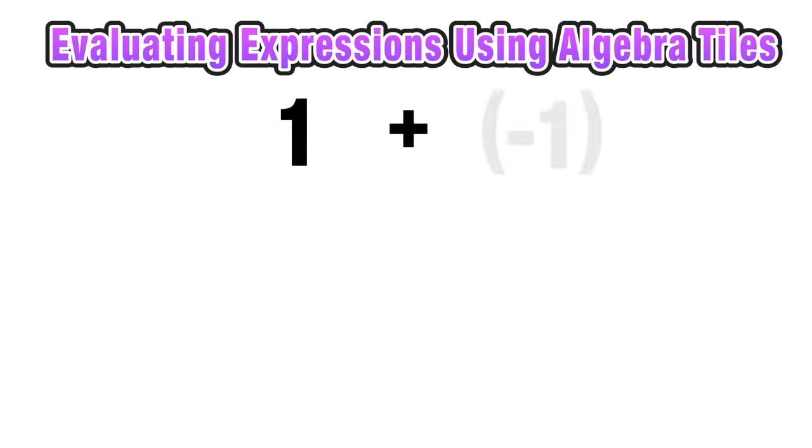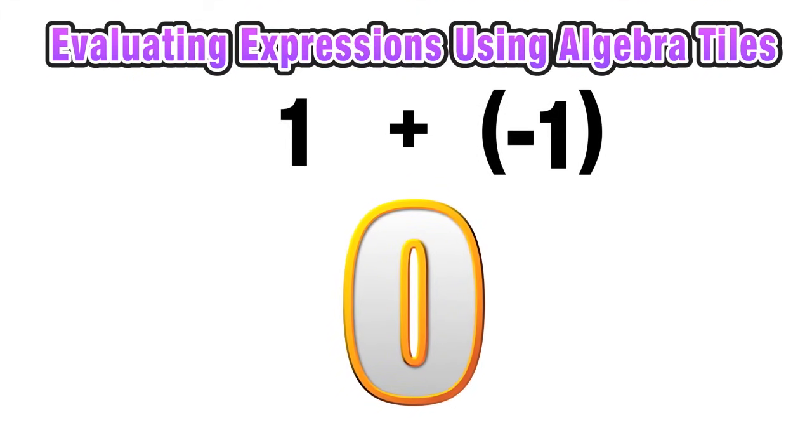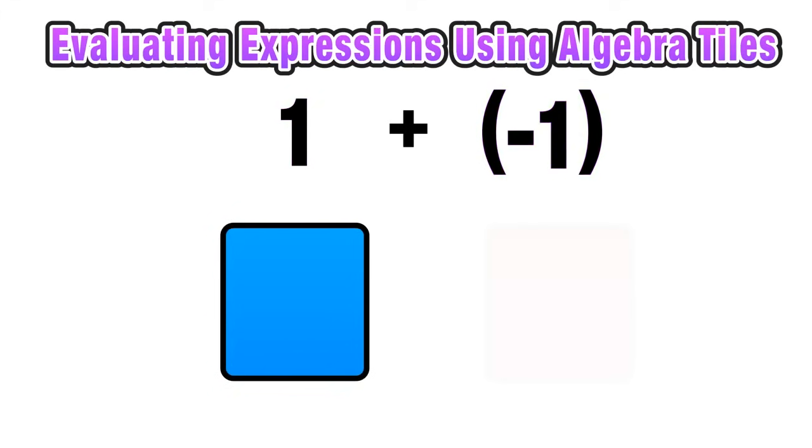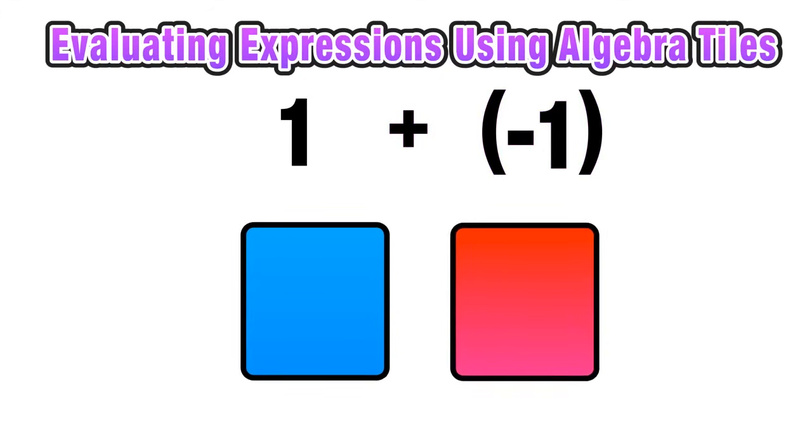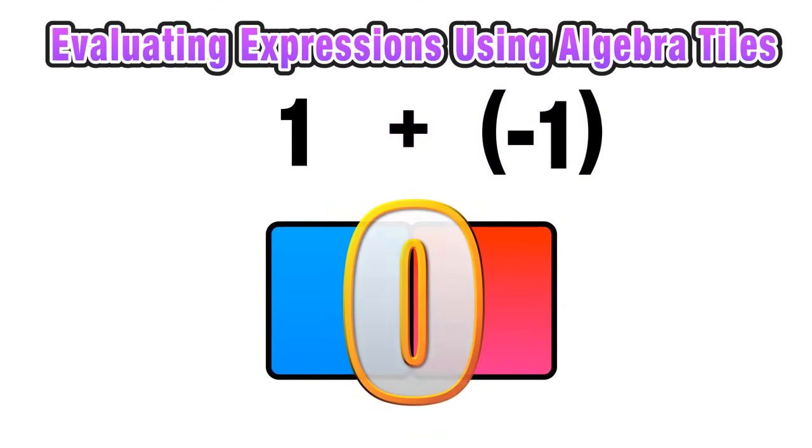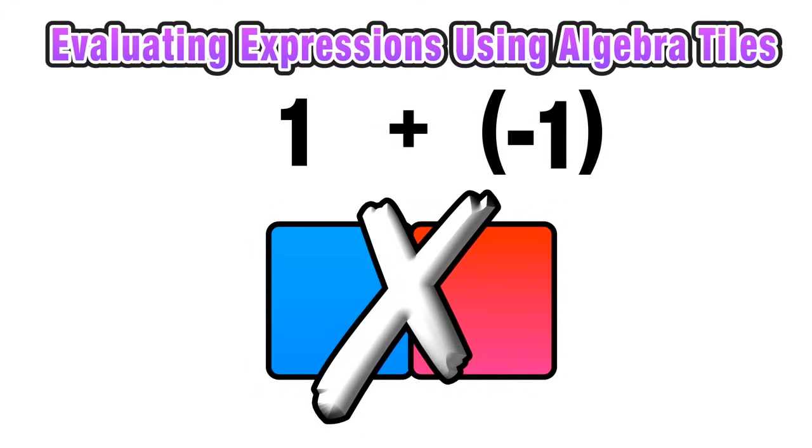Now we know that positive 1 plus a negative 1 is equal to 0. Basically, they cancel each other out. So in terms of algebra tiles, positive 1 is represented by 1 blue square, negative 1 is represented by 1 red square. And again, if I combine those two, 1 plus negative 1 will equal 0. So in this case, with algebra tiles, they will cancel each other out and effectively disappear.